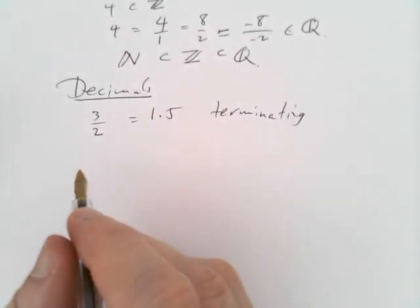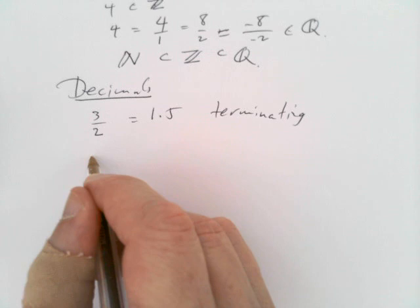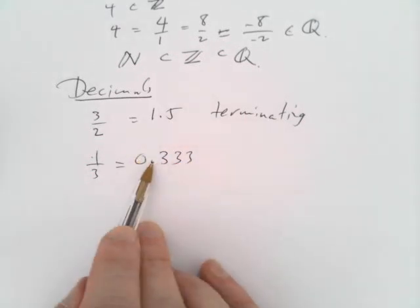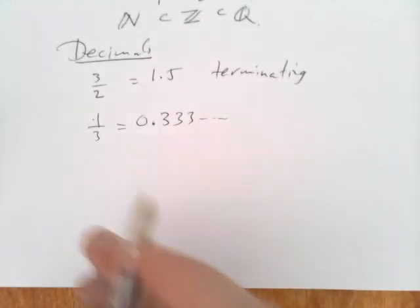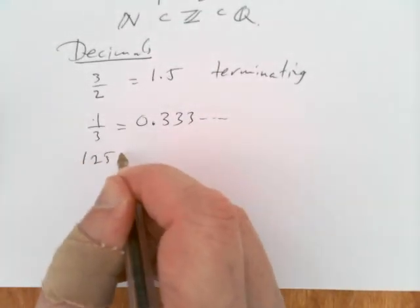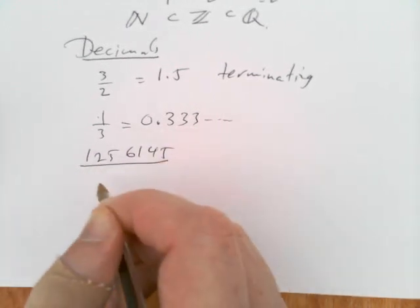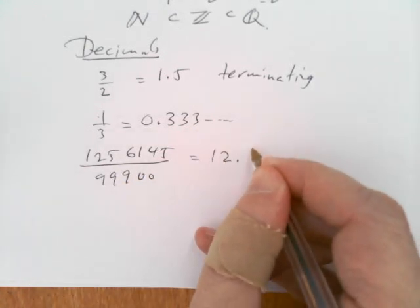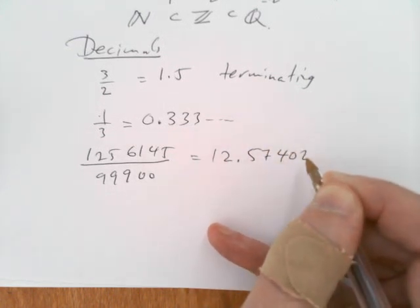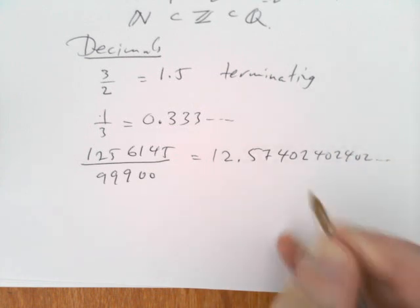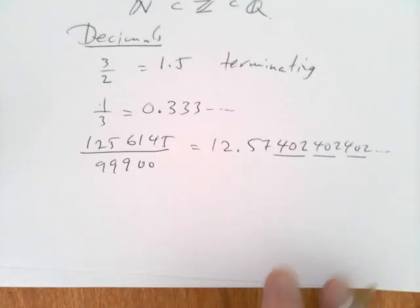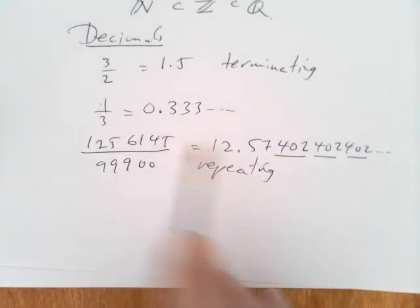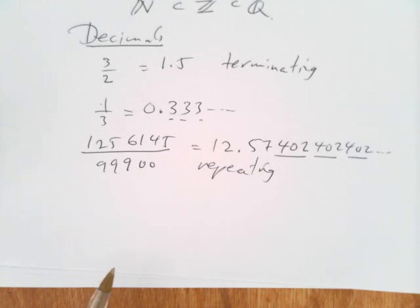On the other hand, we could have other numbers like 1 third, which is 0.333... — there's 0 as the integer part, then the point, and the 3's go on forever. Or a more complicated example: 125614 divided by 99900. It turns out to be 12.574024024024..., where the 402's keep going on and on. That's what we call repeating decimals. So we have terminating decimals, repeating decimals like 1/3 where the 3's go on forever, and whole numbers like 4.